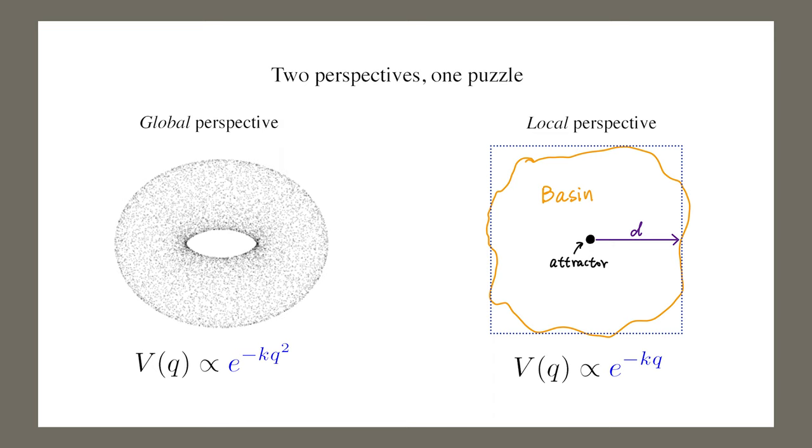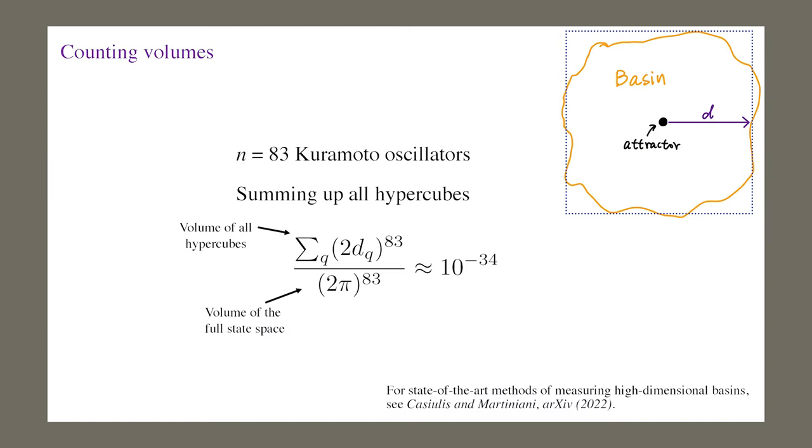We know that the two scalings cannot both be correct, so which one shall we trust? Here is a simple clue suggesting that the second method and the hypercube picture needs a serious second look. If we look at a large number of oscillators, say 83 of them, and sum up the volume of the hypercubes corresponding to each basin, we will find that it only accounts for a tiny fraction of the entire state space.